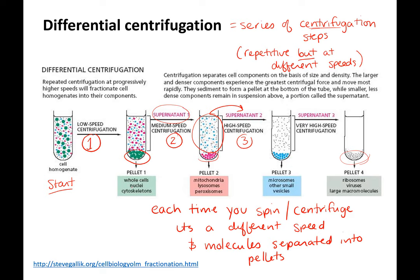For example, if you have whole cells or big things like nuclei, those come down first because they're the biggest. In a cell, the nucleus is big. Then the next set — mitochondria, lysosomes, peroxisomes — comes down. Then smaller stuff like small vesicles, and even smaller like ribosomes and macromolecules. So it's a way to separate molecules based on their size.